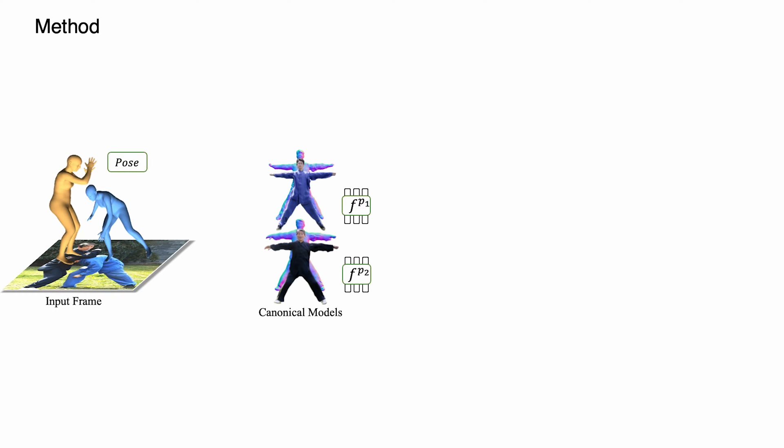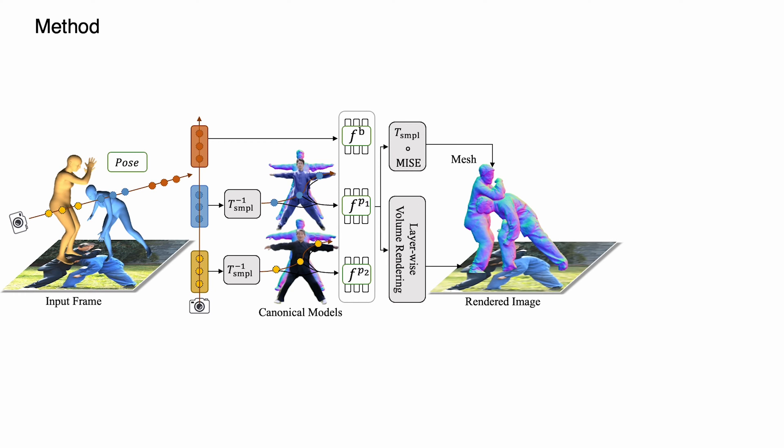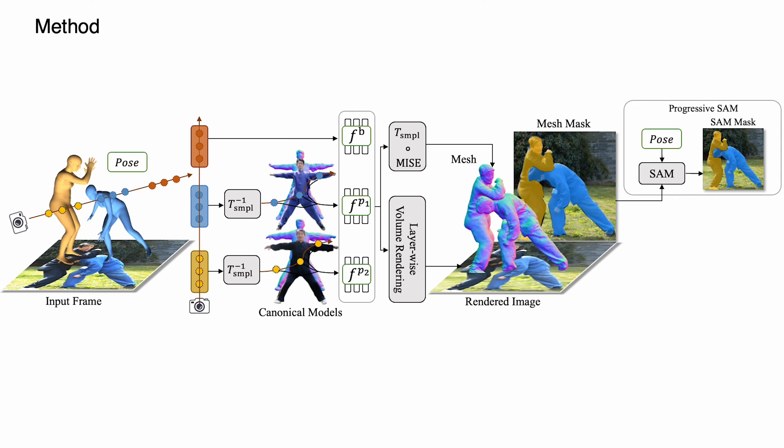Taking a video frame and pose initialization as input, we sample points along the ray for humans and the background. We warp sampled human points into the temporally consistent canonical space, where the human is parameterized by an MLP. We then query the corresponding signed distance and radiance values. We apply layer-wise volume rendering for the entire scene to obtain the rendered pixel color and extract the human meshes in deformed space. We further enhance the instance segmentation supervision by leveraging our evolving 3D human shapes as reliable prompts for SAM to obtain dynamically updated instance segmentation masks.